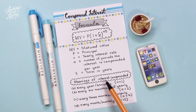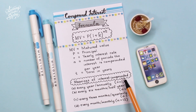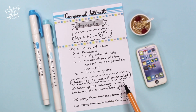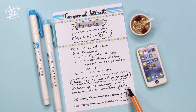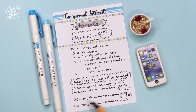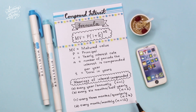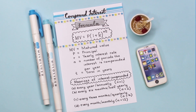The meanings of interest compounded: if it's every year or annually, N is 1. If it's every 6 months or half yearly, N is 2. If it's every 3 months or quarterly, N is 4. If it's every month or monthly, N is 12. Now let's look at the first question.